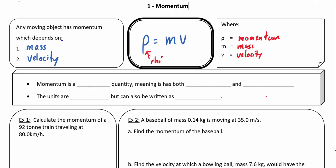Note we're saying velocity, not speed, and that is because momentum is a vector quantity. The direction is going to matter, so it has both magnitude and direction.